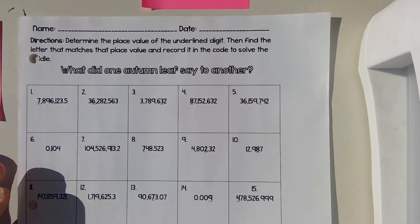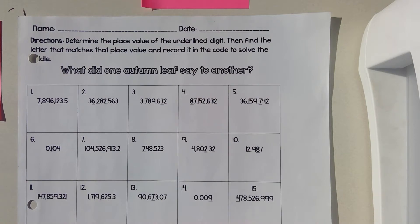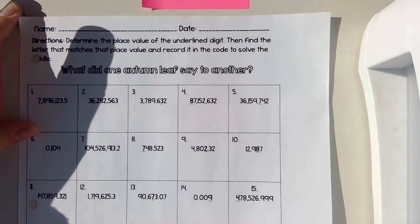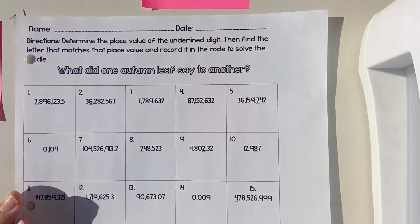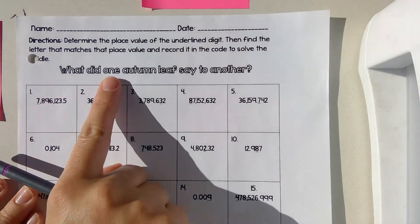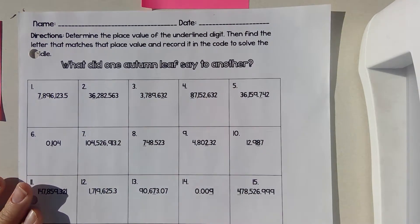We are going to determine the place value of the underlined digit, then find the letter that matches that place value and record it in the code to solve our riddle. Our riddle is: what did one autumn leaf say to another?